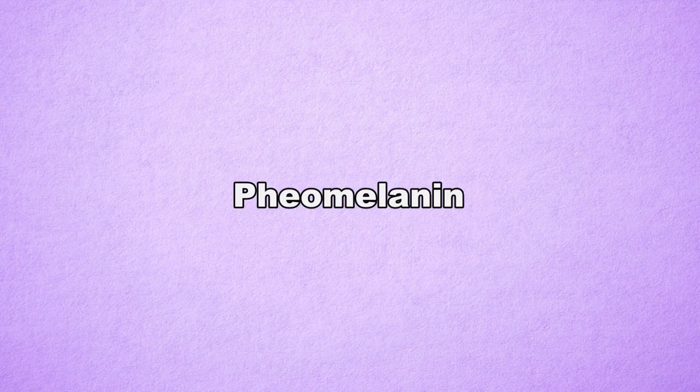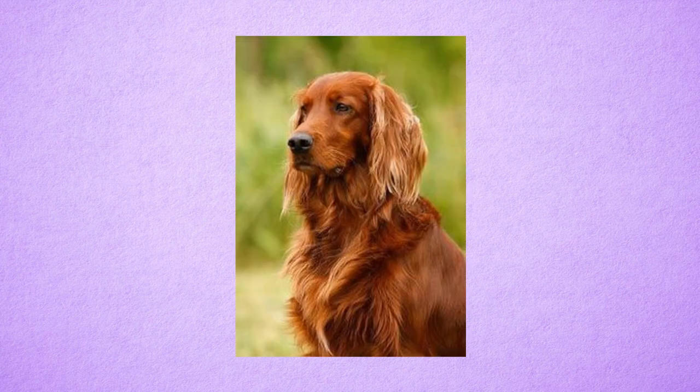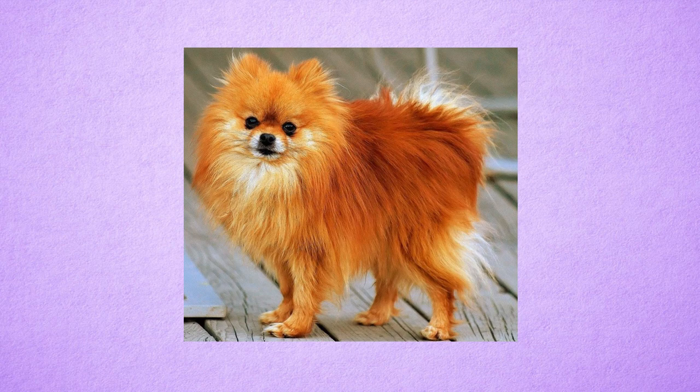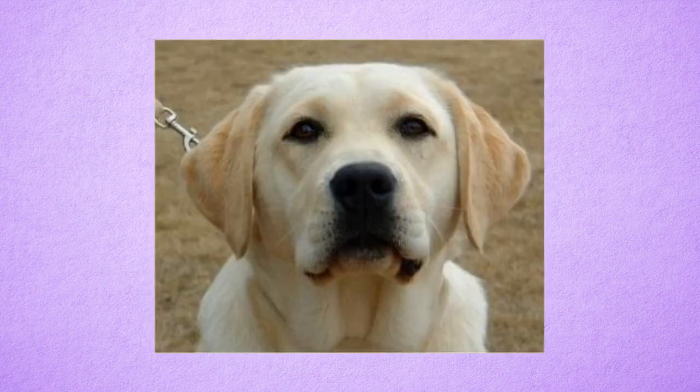The other default color is phaeomelanin. This is the default red pigment. Red covers everything from deep red like Irish Setters to light cream and even pure gold, yellow, and orange. Phaeomelanin is only produced in the coat and does not affect the eyes and the nose. Unlike eumelanin, it doesn't occur in two distinct colors like black and liver, but rather just one color which varies in intensity.